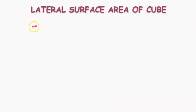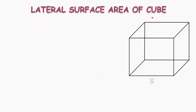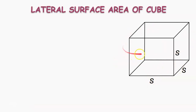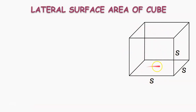Now, let us find the lateral surface area of the cube — the same cube whose dimensions are S each. As we know, lateral surface area means the area of four faces, which are the areas of side faces and front and back faces, that is excluding the areas of top and bottom faces.